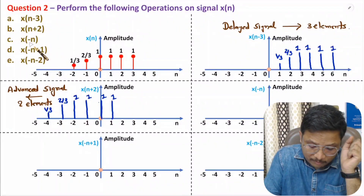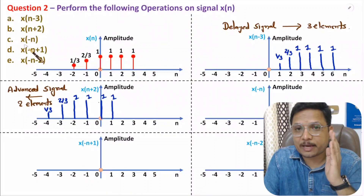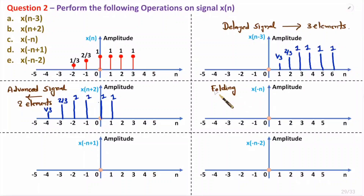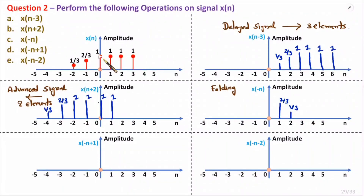Now the third operation is x(-n), which means folding. In folding, we generate the mirror image of the given signal. The element one-third at n = minus two will appear at n = plus two; two-thirds at n = minus one will appear at n = plus one. The reference remains as is with magnitude one, and then we have three elements with magnitude one on the other side. This is how we perform the folding operation — we generate the mirror image.